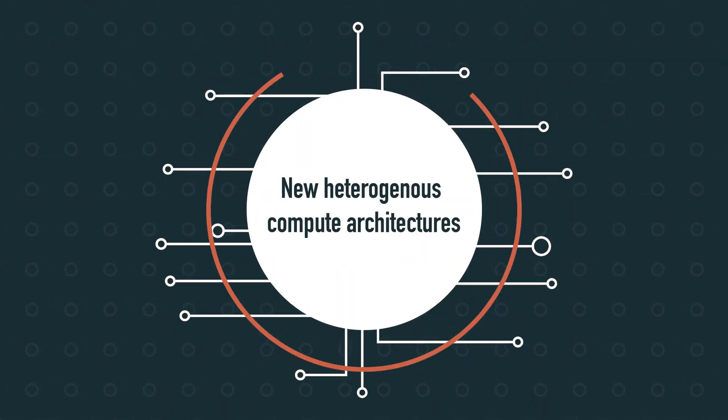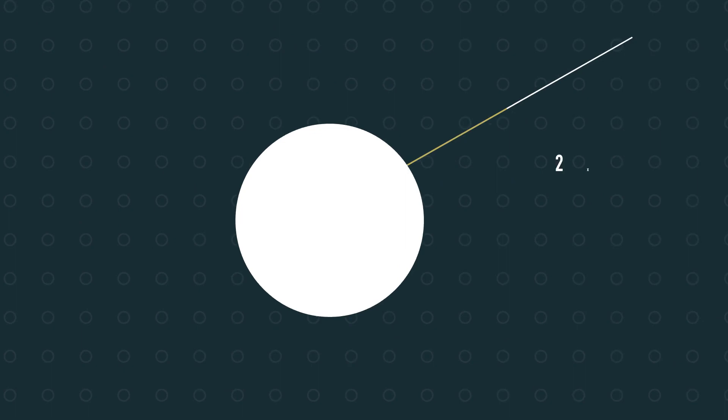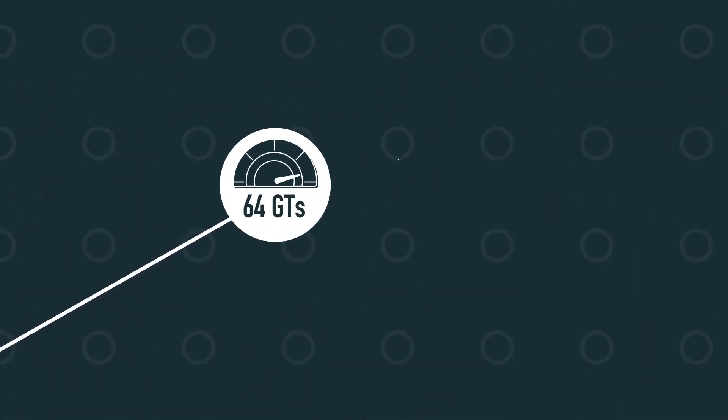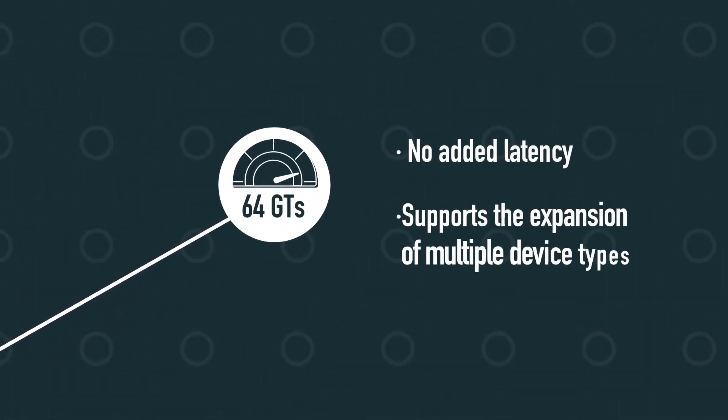CXL 3.0 doubles the data rate to 64 gigatransfers per second with no added latency and supports the expansion of multiple device types.